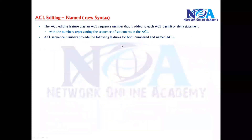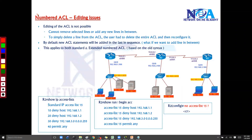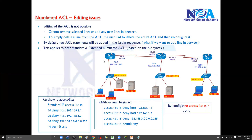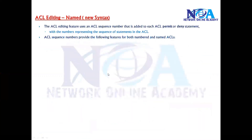The next thing we'll see is the editing of ACLs. We have already discussed the issues with numbered ACL editing — we cannot remove any specific lines; if we try to remove one single line it will automatically remove the complete ACL. And whenever you add any new line, it goes to the last. Adding a line in between is not possible unless you use a notepad, as shown before. This applies for both standard and extended ACLs. So let's see the editing part.